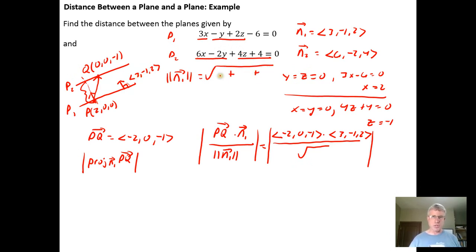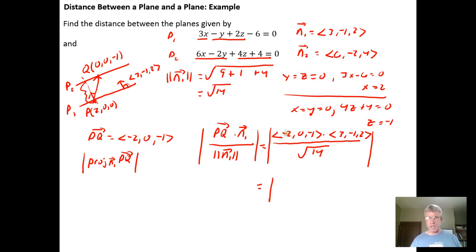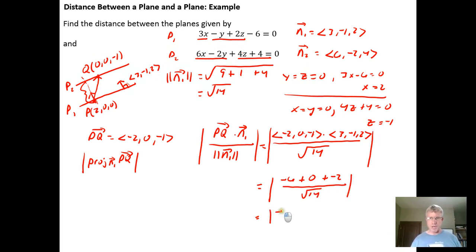Taking the dot product in the numerator: (−2)(3) + (0)(−1) + (−1)(2) = −6 + 0 − 2 = −8. So the distance is the absolute value of −8 over √14, which equals 8/√14.